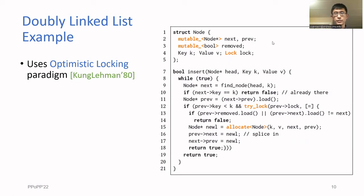The idea is to first traverse the list without taking any locks and then only lock the neighborhood of nodes that you wish to modify. This is usually much faster than hand over hand locking. In general, combining our library with optimistic locking gives you simple and efficient lock-free data structures.